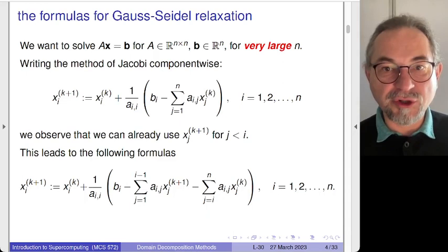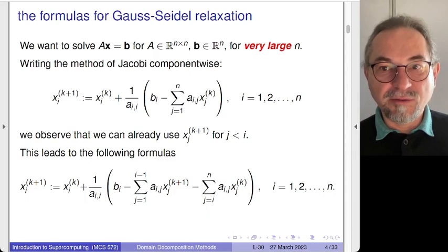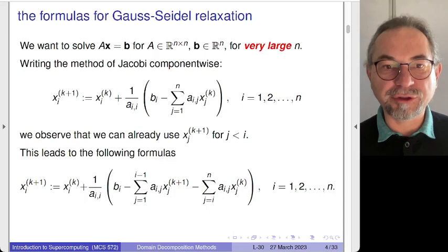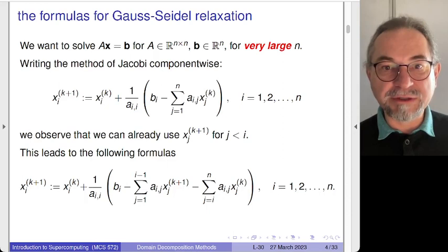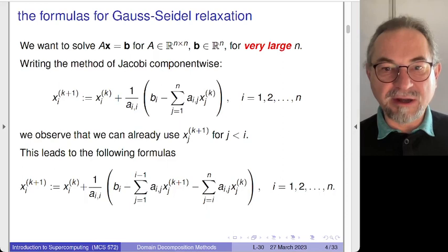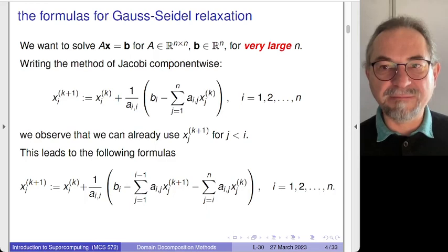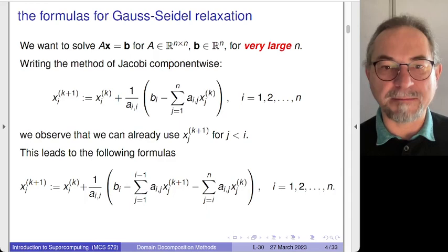The formulas show the relationship between the two methods. The main difference with Gauss-Seidel is that as soon as we have a new update for a component of the solution, we use it in the next update. Both formulas are written row-wise, updating components one after the other. In Gauss-Seidel, when updating the i-th component, we use all previously updated i-1 components — this is obvious from the first j-loop in the sum.